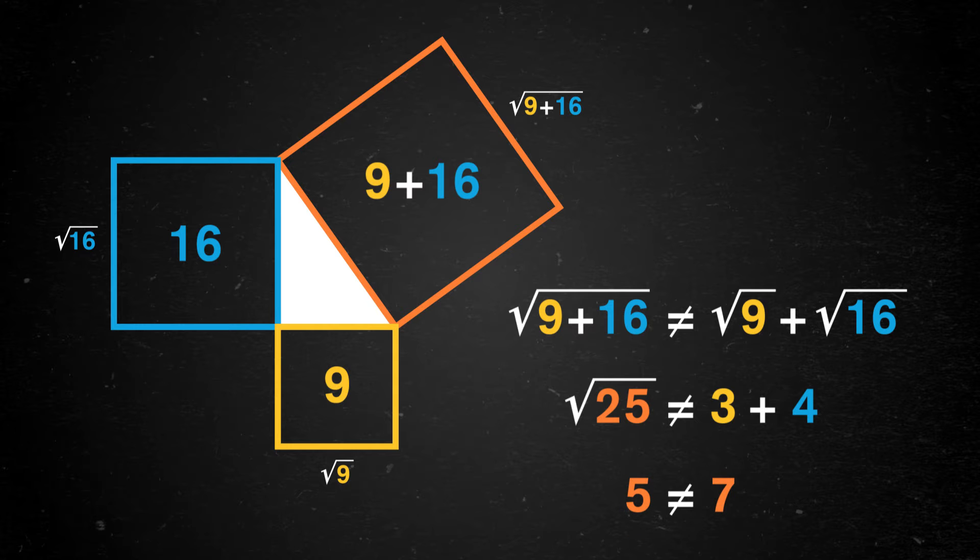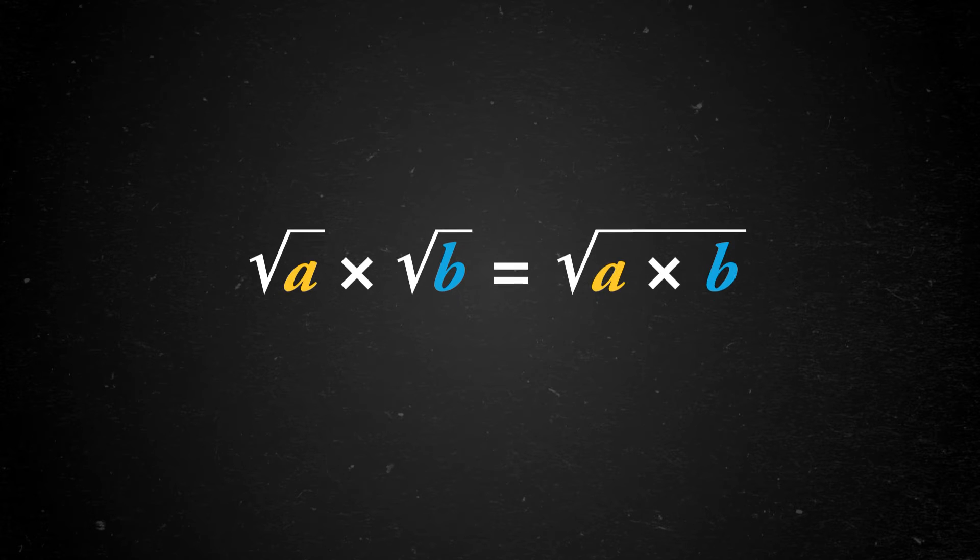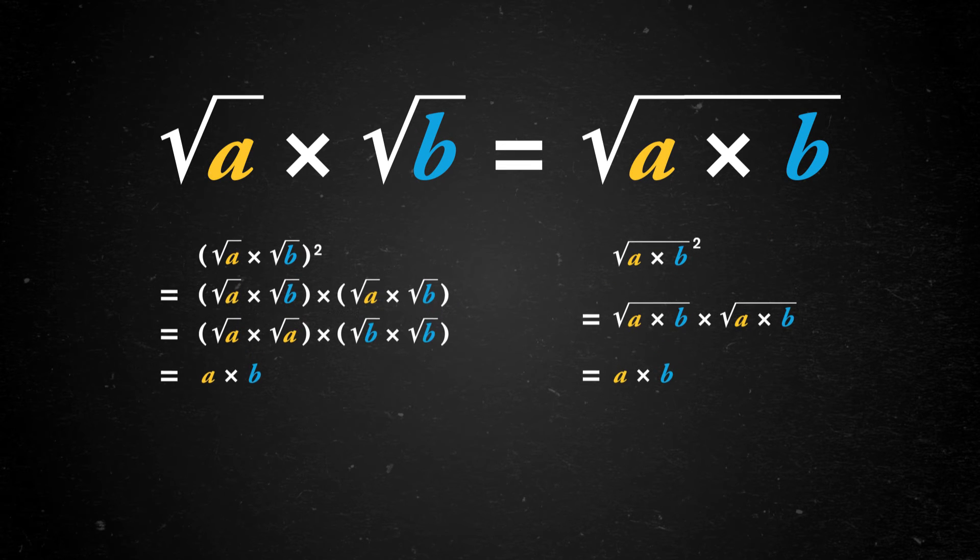But here's the thing. Square roots and multiplication do get along well. The square root of a times the square root of b does equal the square root of a times b. We can run a quick mental check on this in several ways. By substituting in real numbers, or by formally squaring both sides and seeing that they both, when squared, lead to a times b.